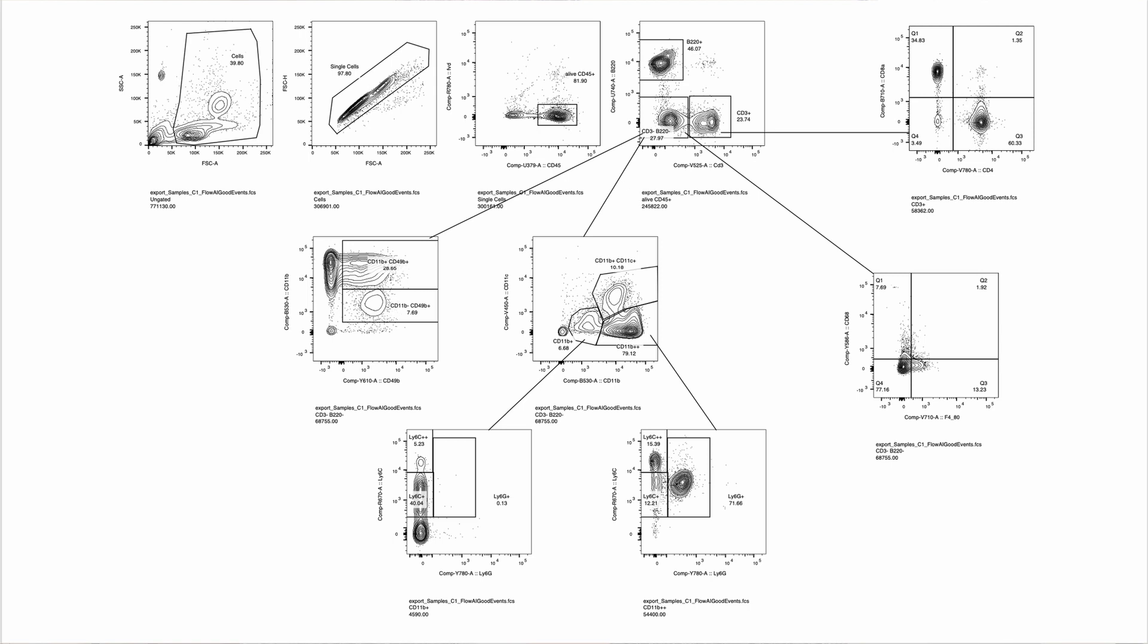From the CD3s, they went to look at the classical CD4 versus CD8. And then from this double negative population, they went to look at a number of myeloid expressing markers. So you can see here all the various CD11B and CD49B gates, 11B and C broken down further into the LY6C, LY6G area.